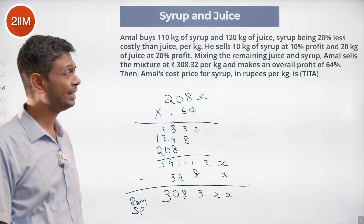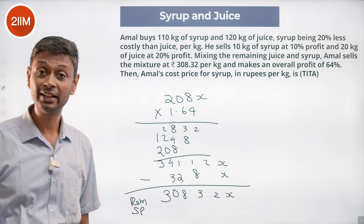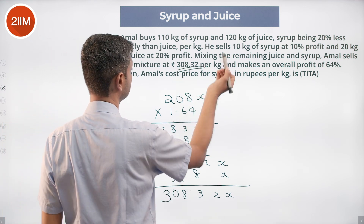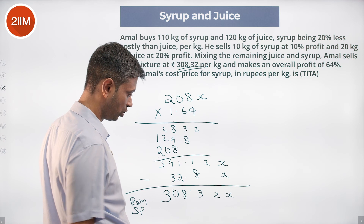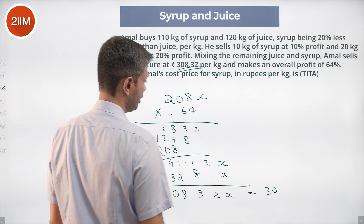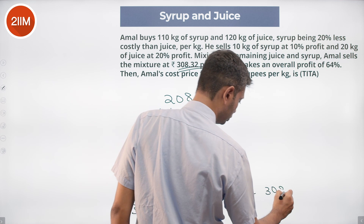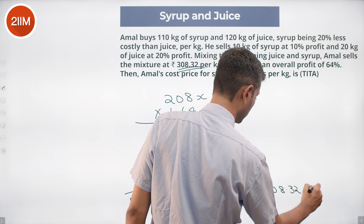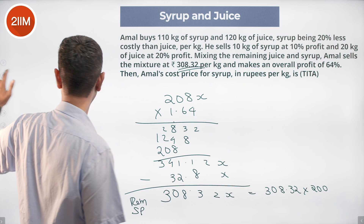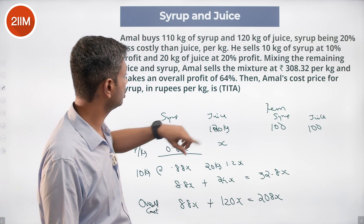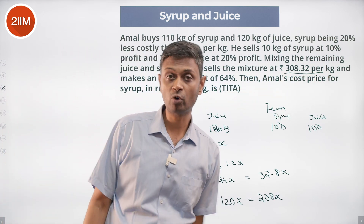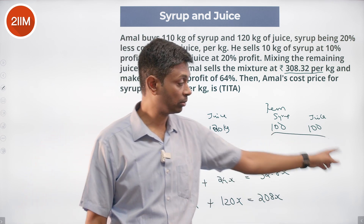Nice — brilliant! The eyes lit up seeing this number. The selling price per kilogram of the mixture is 308.32, and 308.32X is what we calculated. These match perfectly.